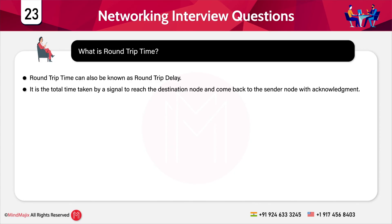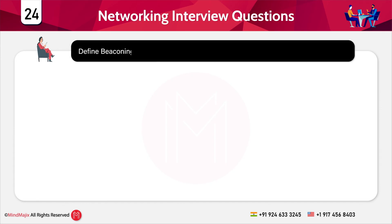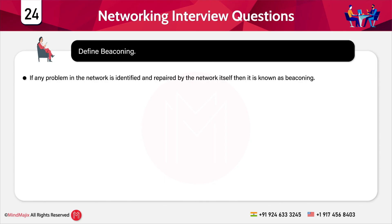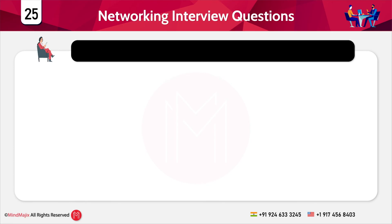The next question is: define beaconing. If any problem in the network is identified and repaired by the network itself, it is known as beaconing. FDDI and token ring mainly use this beaconing process. Beaconing is essentially a process of self-healing for a network — if the network is damaged for any known or unknown reason, the network has the ability to heal itself.